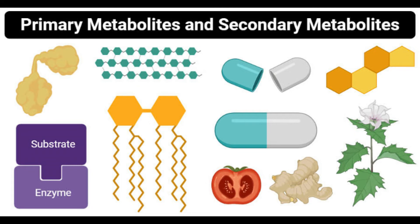Primary metabolites are involved in the growth, development, and reproduction of organisms, whereas secondary metabolites are involved in ecological functions and species interactions. Primary metabolites may form the molecular structure of organisms, while secondary metabolites are not part of the molecular structure. Primary metabolites are used in various industries, while secondary metabolites are used in biotechnological procedures for drug formation. Primary metabolites are not active in defense, whereas secondary metabolites act against foreign invaders as a defense mechanism.